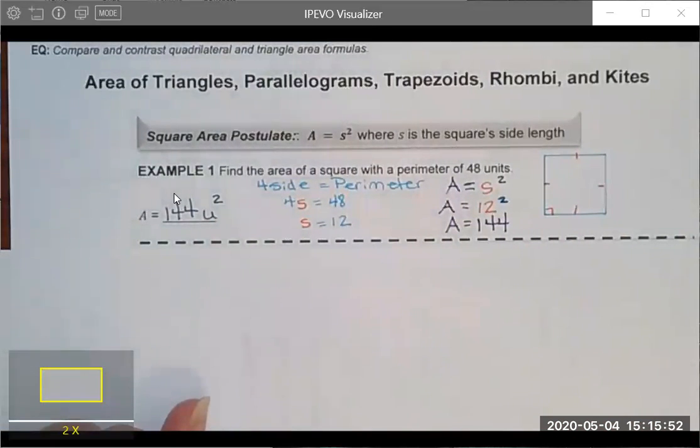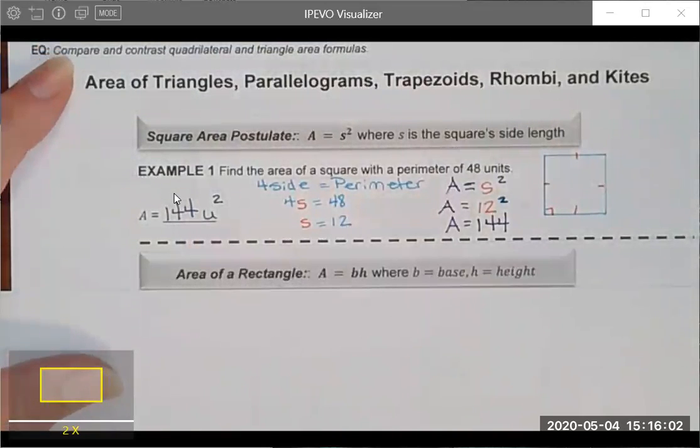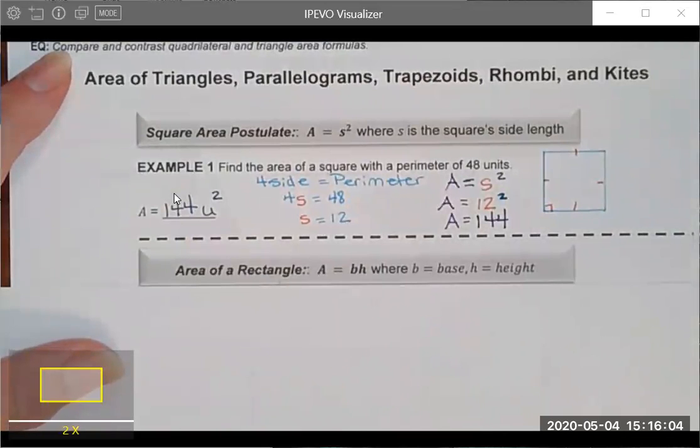Remember that when we are expressing area we always label with our units and because it's a two-dimensional object our units will be squared. If we move on and look at the next formula, again one that you hopefully are familiar with, the area of a rectangle can be found by taking the base times the height.